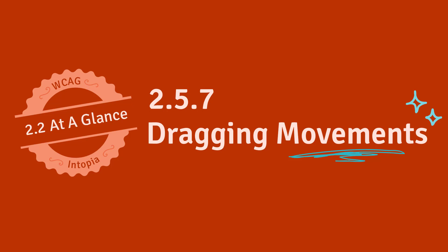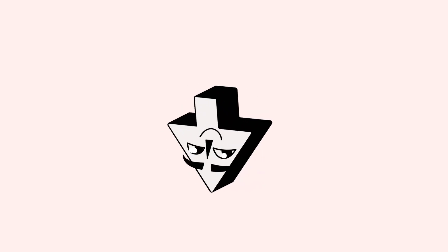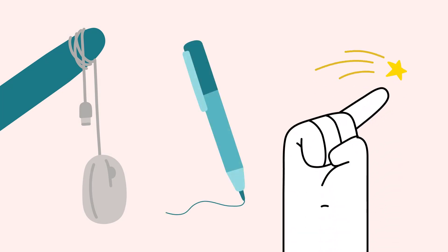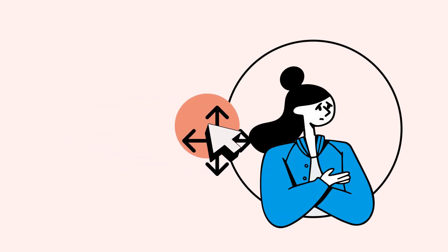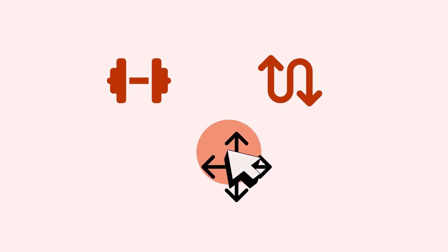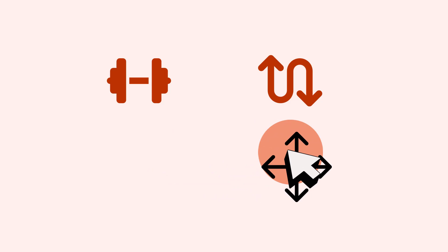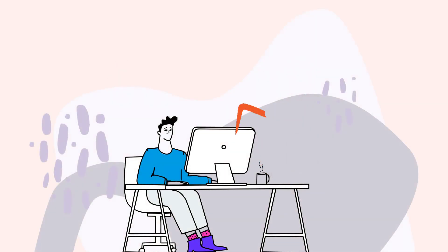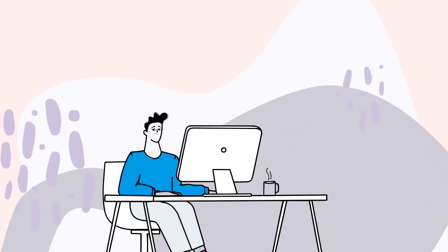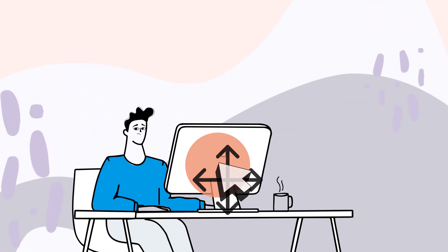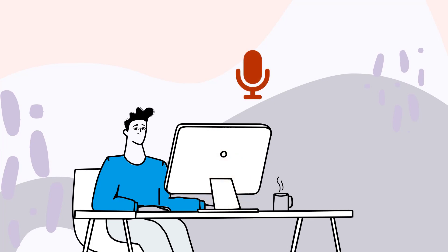Point, click, drag and drop — if you've used a pointer you've probably had to do these actions. A pointer could be a mouse, a stylus, or even your finger. And for some people, dragging a pointer can be quite a drag. A dragging movement requires strength to hold down the pointer and dexterity to move it into place. These actions can be difficult for some people, and some assistive technology does not work well with dragging, such as voice control or eye gaze systems.